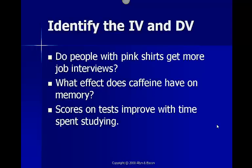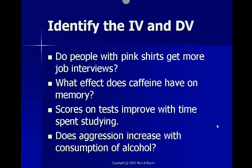Scores on tests improve with time spent studying. This one is written backwards from the other two. Our independent variable would be the time spent studying. Our dependent variable is the score on the test. Does aggression increase with the consumption of alcohol? Our independent variable is the consumption of alcohol. Our dependent variable is the level of aggression.